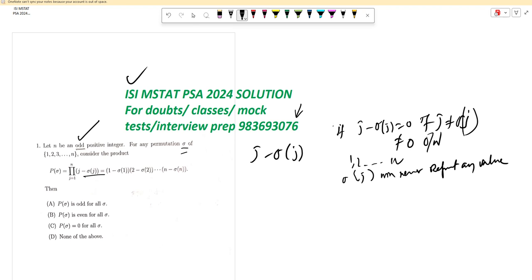Now the result of that, the key insight is in noticing that for P of sigma to be non-zero, none of the terms j minus sigma j should be zero. That means j not equal to sigma j. This has been established.